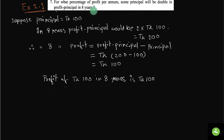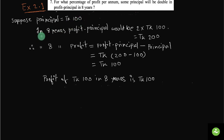Let us suppose the principal is Taka 100. According to the question, in 8 years the profit principal would be 2 into Taka 100, which equals Taka 200. So in 8 years, the total amount becomes Taka 200.